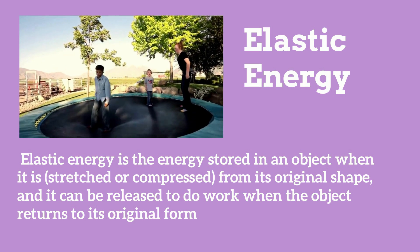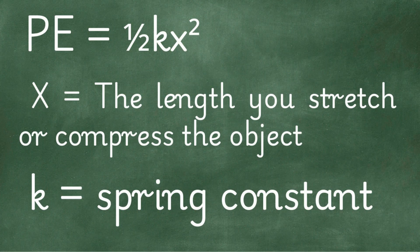The formula for potential energy is PE, potential energy, equals one half K times X squared.